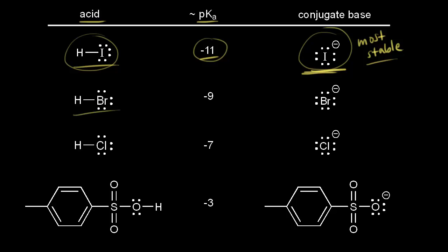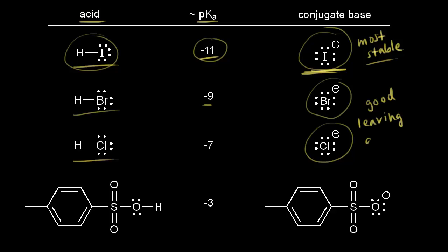Which means that the iodide anion is an excellent leaving group because it is very stable. Next we have hydrobromic acid, with an approximate pKa of negative nine — so the conjugate base is the bromide anion, also a stable conjugate base and therefore a good leaving group. For HCl it's the chloride anion, also a good leaving group. So you see these halide anions as leaving groups all the time in organic mechanisms.